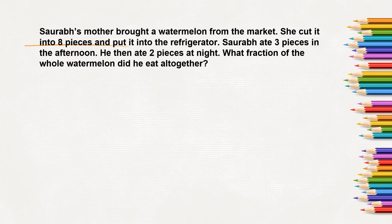Next question. Saurab's mother bought a watermelon from the market. She cut it into 8 pieces and put them into refrigerator. Saurab ate 3 pieces in the afternoon. He then ate 2 pieces at night. What fraction of the whole watermelon did he eat all together?